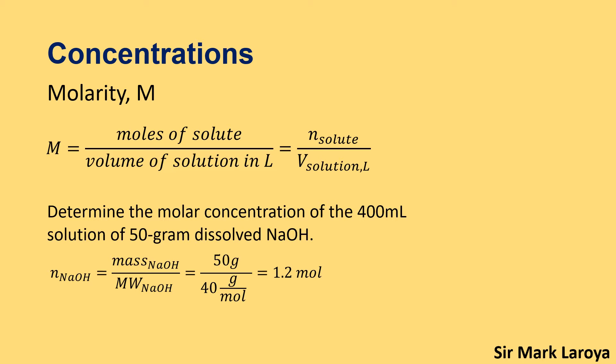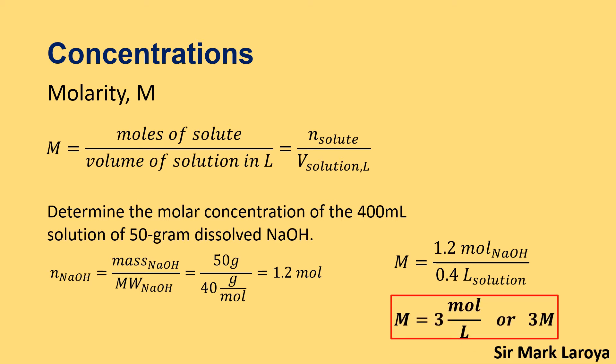This is the number of moles of our solute that we will use in our formula to determine the concentration of our solution in terms of molarity. Molarity is equal to 1.2 moles of NaOH divided by 0.4 liters of our solution, giving us 3 moles per liter or simply 3 molar. This is the concentration of our solution in terms of molarity.